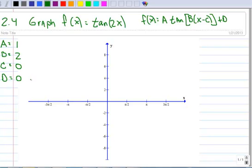The next thing you want to do is calculate your new period. So the new period, I'm going to abbreviate that as NP, is the pure graph period divided by the absolute value of B.